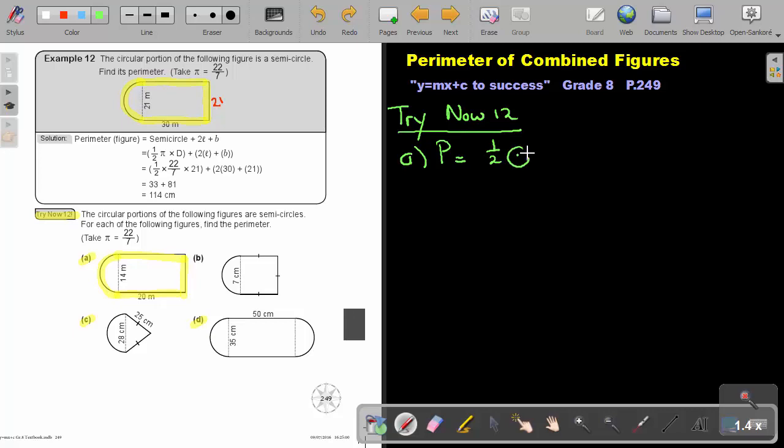So the perimeter will be a semicircle, which is just half a circle, plus two lengths. Remember, this is a length, this is a length, plus a breath, this is a breath. Remember, if this is 14, then this one will also be 14.